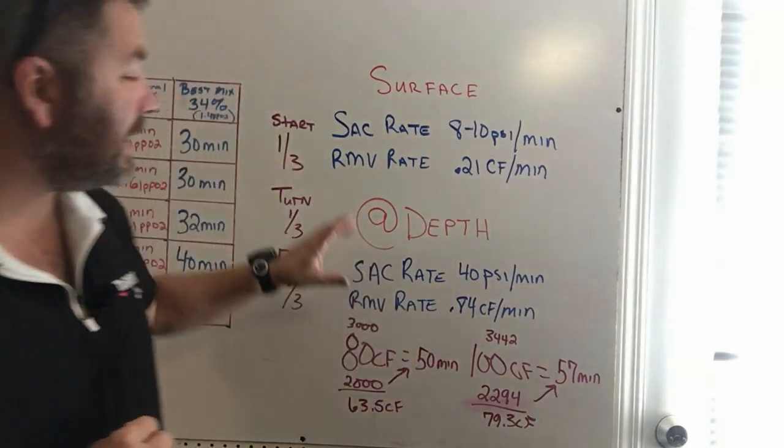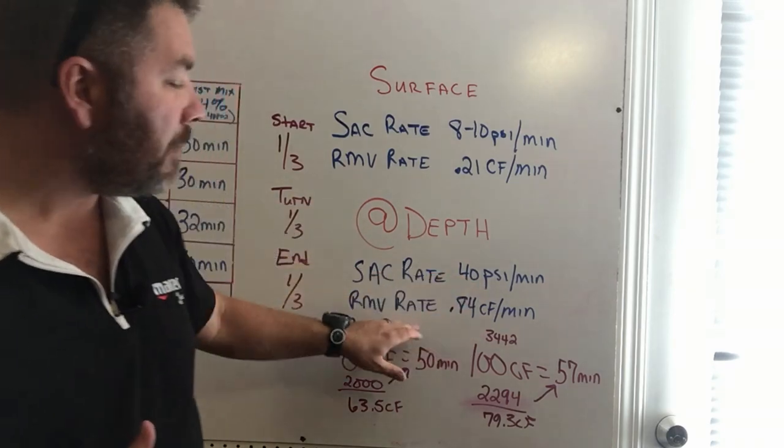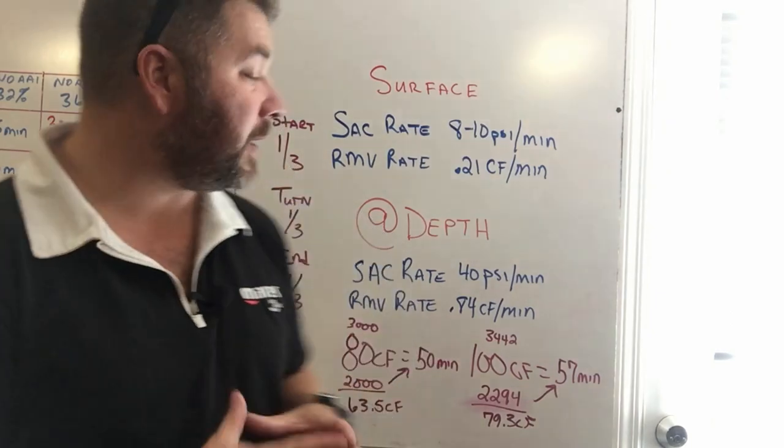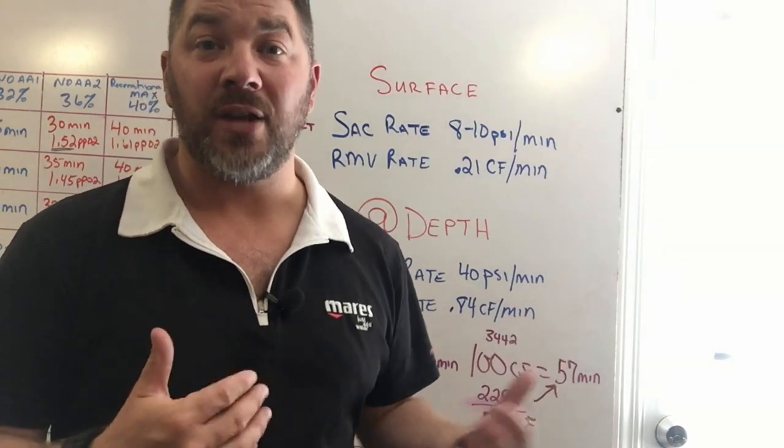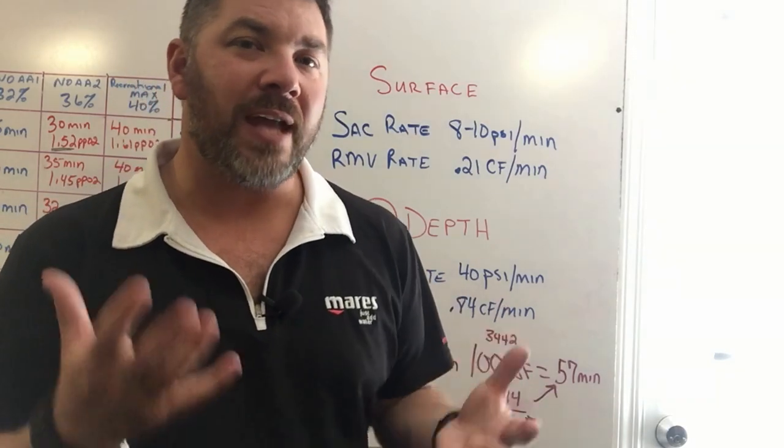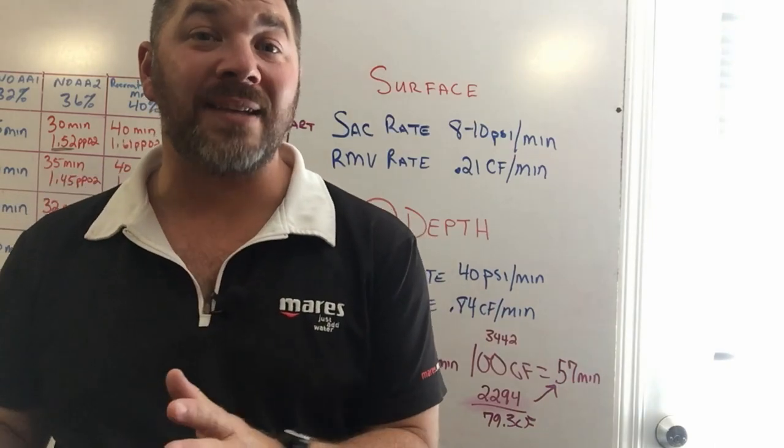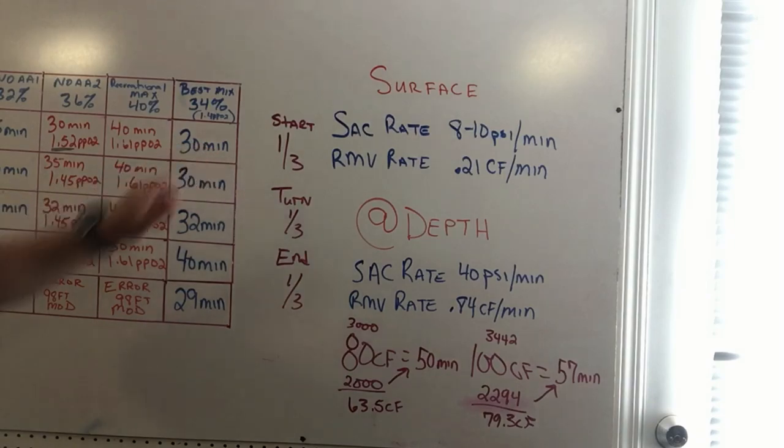At a depth of 100 feet, my SAC would be 40 PSI a minute, and my RMV rate would actually change to 0.84 cubic feet a minute. That means I'm actually breathing up four times the amount of gas as what I do at the surface. I need to know that number simply because it helps me choose the best cylinder for a 100 foot dive to 30 minutes.